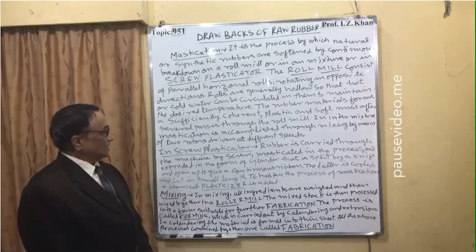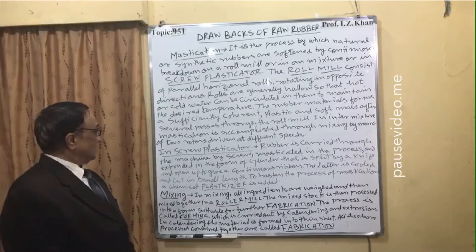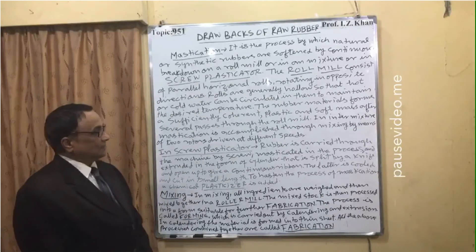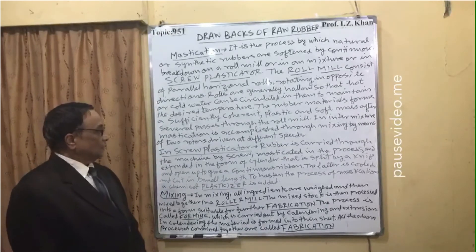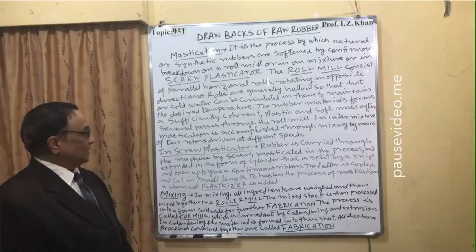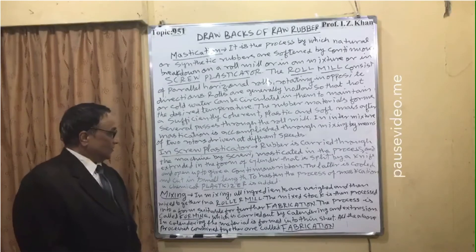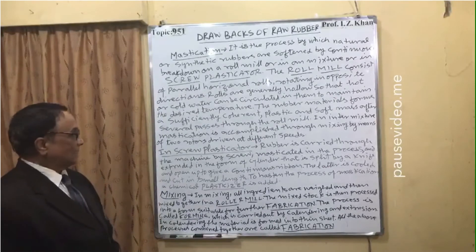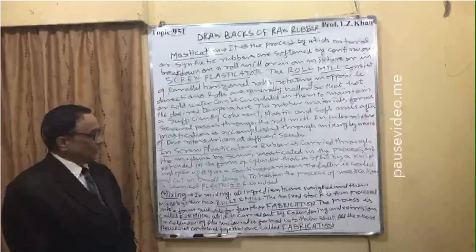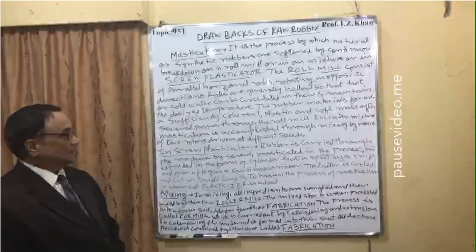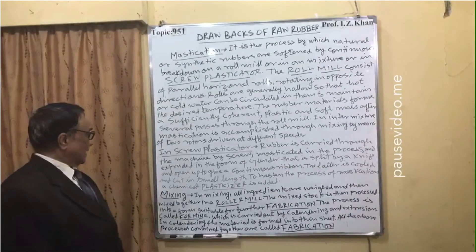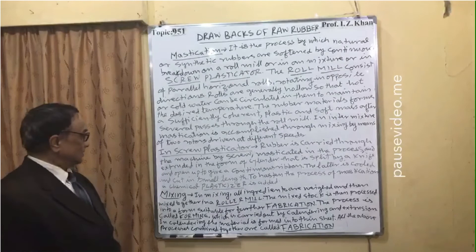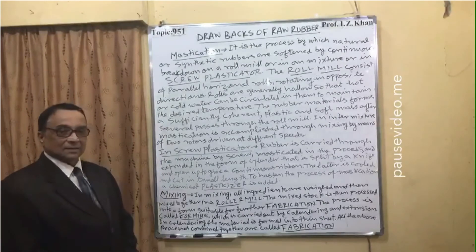In a screw plasticator, rubber is carried through the machine by a screw, and an extruder in the form of a cylinder is split by a knife and opened up to give a continuous ribbon, which is then cooled and cut into small lengths. To hasten the process of mastication, a chemical called a plasticizer is added.